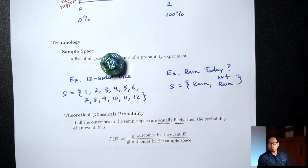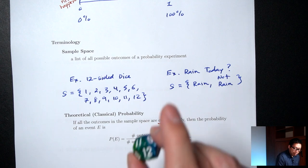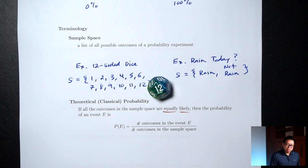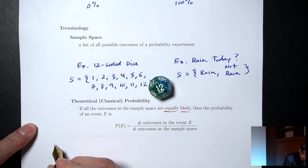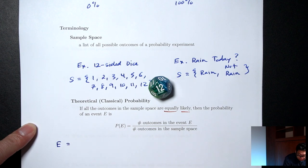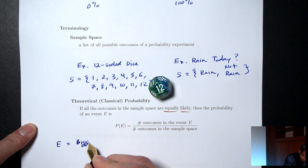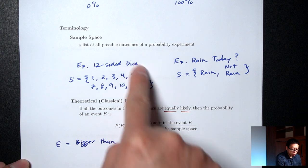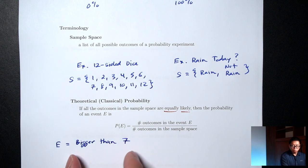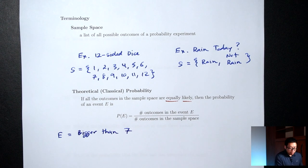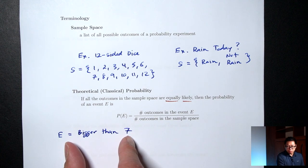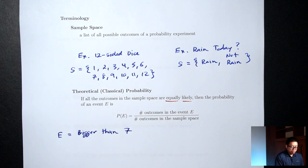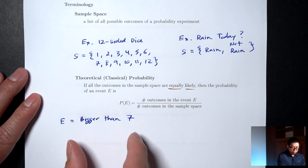So let's do an example with the dice situation. Say I'm playing a board game that involves this dice, and I need a number bigger than seven to win. That's called an event — I'm going to call it E for event. The event I'm interested in is 'bigger than seven.' An event is really just a sub-collection of the sample space, and usually we describe it using words like 'bigger than seven.' In particular, the numbers bigger than seven would be 8, 9, 10, 11, 12.